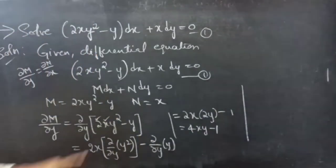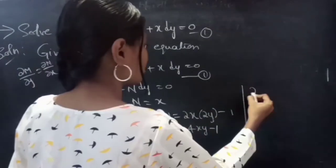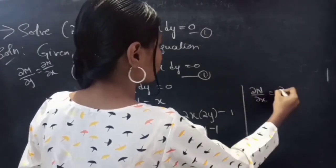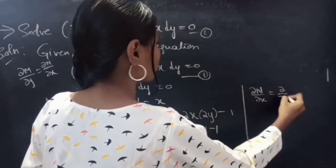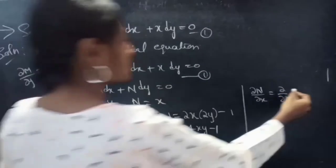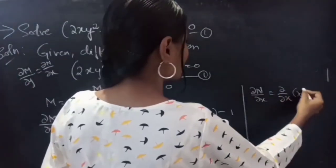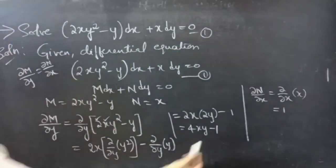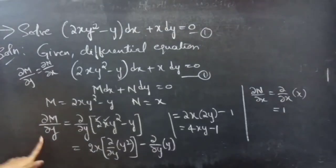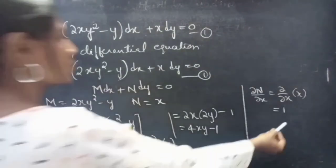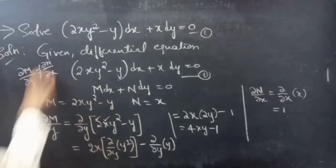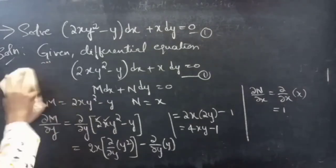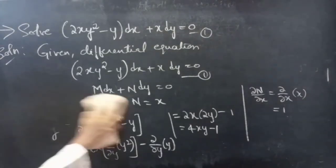Now let's find the partial derivative of N with respect to x. ∂N/∂x = ∂x/∂x = 1. It's clear that ∂M/∂y is not equal to ∂N/∂x, so the given differential equation is non-exact.